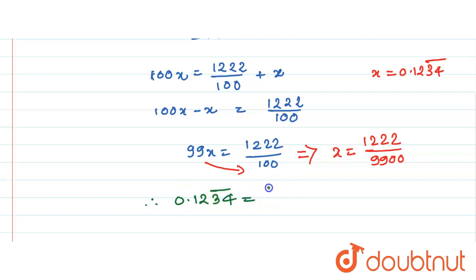Okay, and therefore x is nothing but 0.1234. So this can be expressed as 1222 divided by 9900. This is my answer.